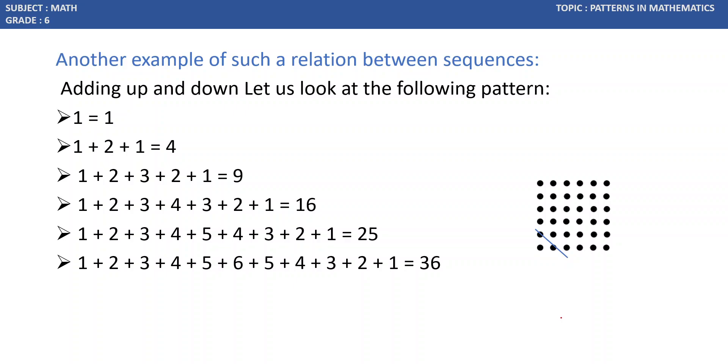Let us see another example of such a relation between sequences. Adding up and down. When we are writing 1, then 1 plus 2, then descending order 1, 2. This is ascending order. Next, descending order: 1 plus 2 plus 1. This also equals 2 squared. Next, 1, 2, 3 plus 2 plus 1. This is also 9, which is 3 squared. 1 plus 2 plus 3 plus 4 plus 3 plus 2 plus 1 gives us 16. So we have to consider the middle number, the highest number. The sum of those numbers leads to the square of the middle number.